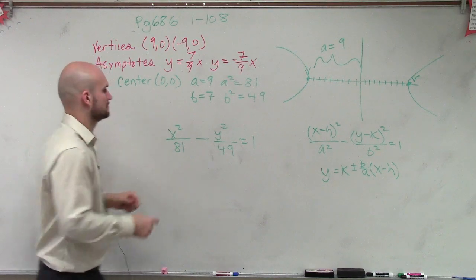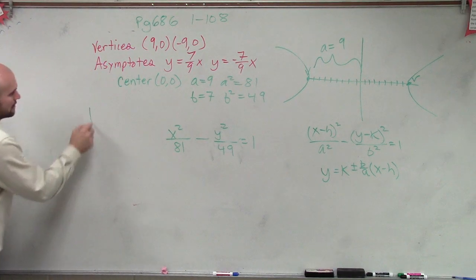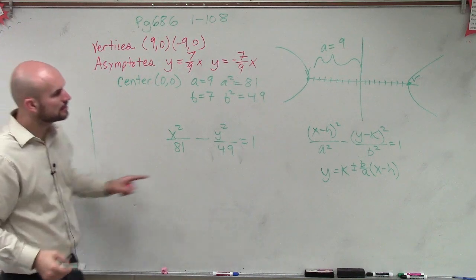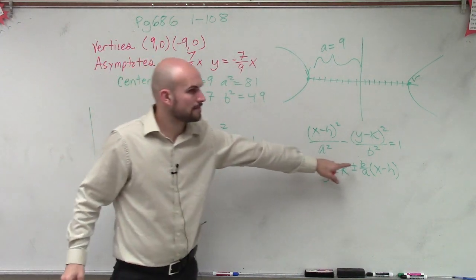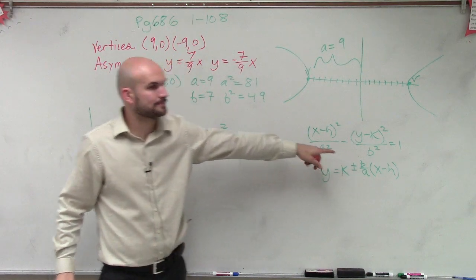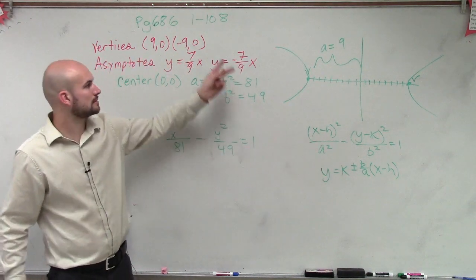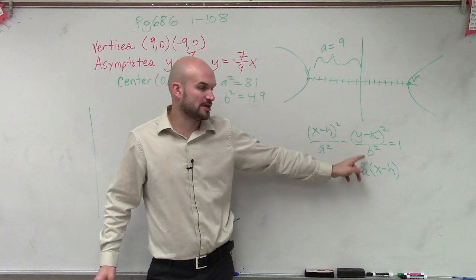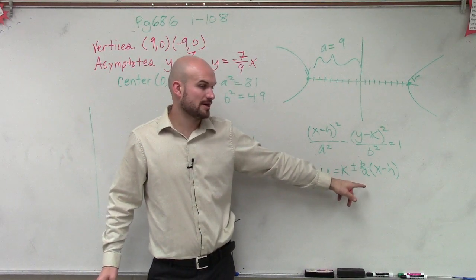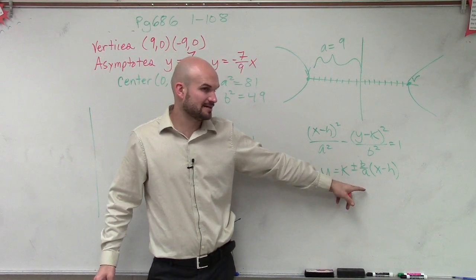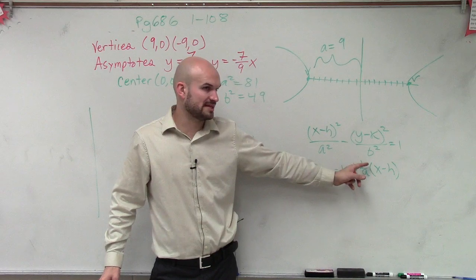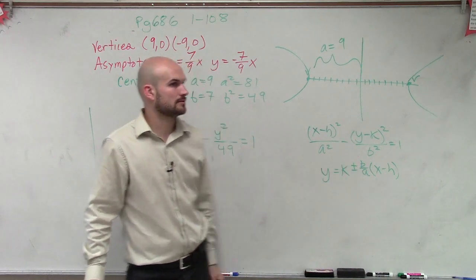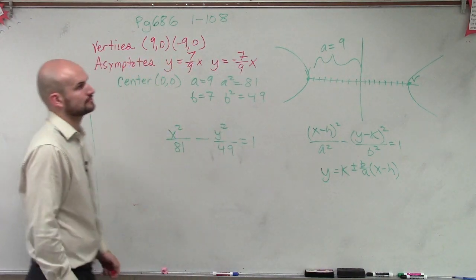It's 7 because the asymptote equation gives us 7 over 9, and b is 7. So it's b over a, and we know a is 9, therefore b is 7.